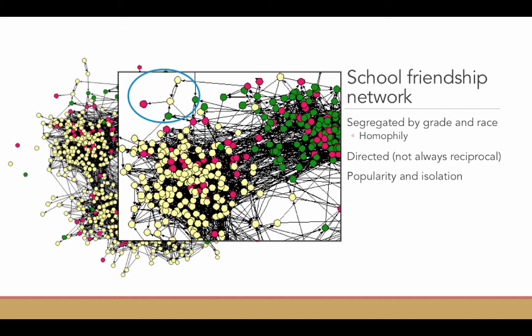You can visualize popularity and social isolation in a visualization of a network. In this purple circle, you can see this one white student who has a lot of arrows pointing at them. This means that there are a lot of students in the high school and in the middle school who nominated this person as their friend. That person is particularly popular.